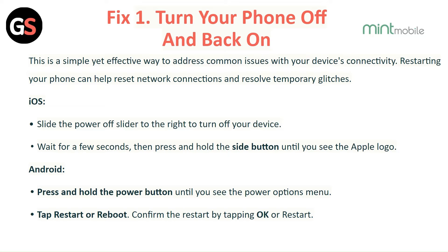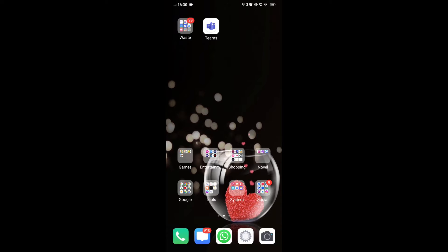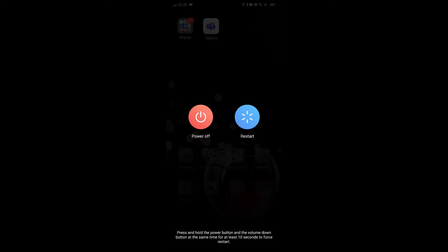Slide the power off slider to the right to turn off your device. Wait a few seconds, then press and hold the side button until you see the Apple logo. For Android: press and hold the power button until you see the power options menu. Tap Restart or Reboot, then confirm by tapping OK or Restart.